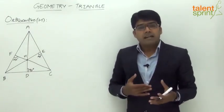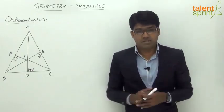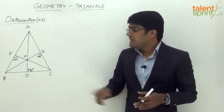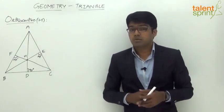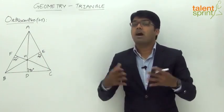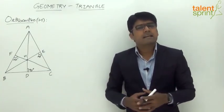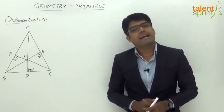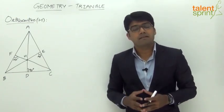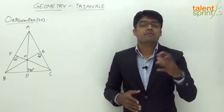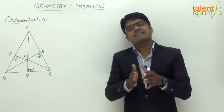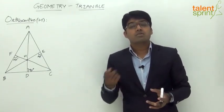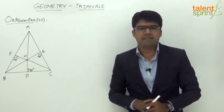Based on the type of triangle, the position of the orthocenter may change. In an acute angle triangle, the orthocenter lies inside the triangle. In an obtuse angle triangle, the orthocenter lies outside the triangle. Unlike the median, which always lies within the triangle, the orthocenter may lie inside, outside, or on the triangle.